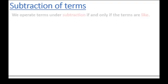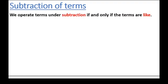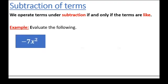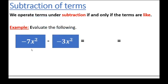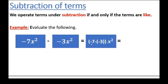Subtraction of polynomial functions is very related to the addition of polynomial functions. We still operate terms under subtraction if and only if the terms are like terms. In the given example, we have minus seven x squared and minus three x squared, and we are asked to operate those two terms under subtraction.